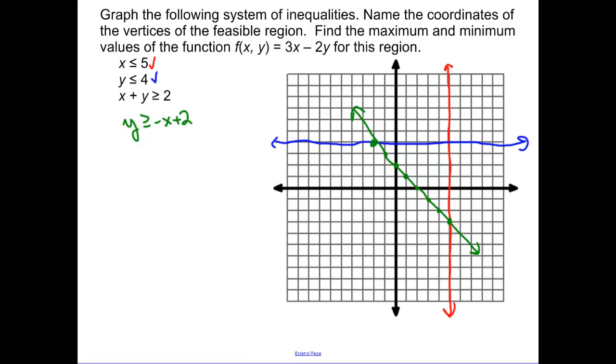Now let's think about this. Where are we shading? For the red line, we're shading less than. For the blue line, we're shading less than. But for the green line, we're shading greater than. So our feasible region is everything in here.